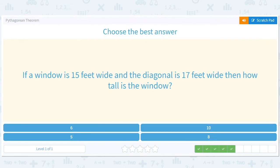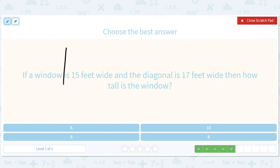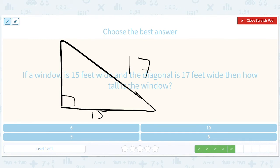If a window is 15 feet wide and the diagonal is 17 feet wide, then how tall is the window? It's a good thing we memorized that Pythagorean triple. 15, the diagonal is 17. Do you remember what this is? 8. 8, 15, 17. That's a good one to know. I guess I should label—if it's 15 feet wide, this is 17, this is 8.